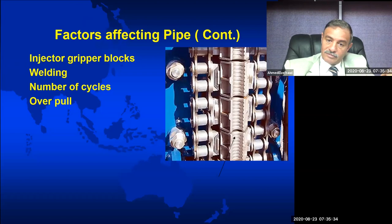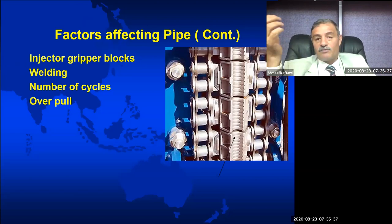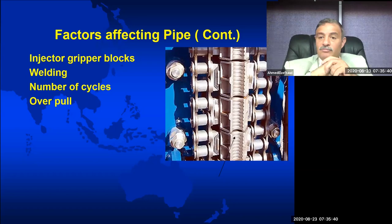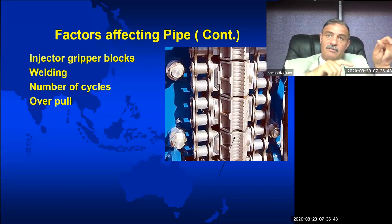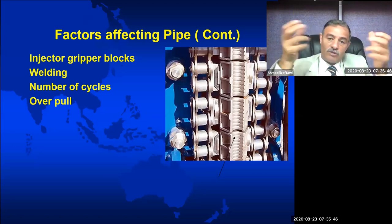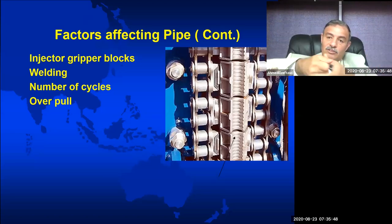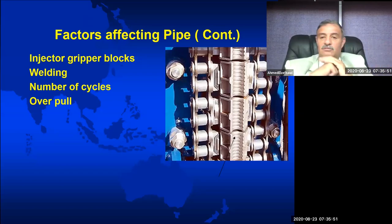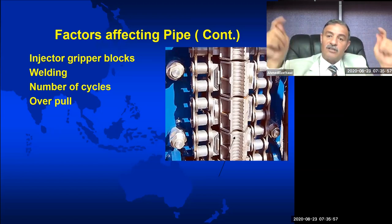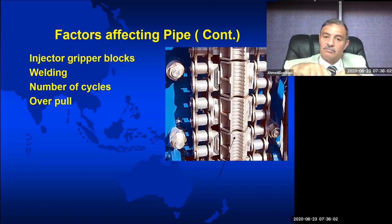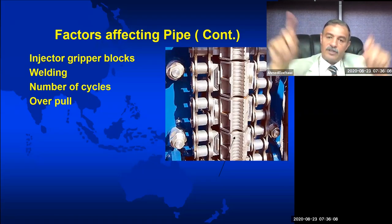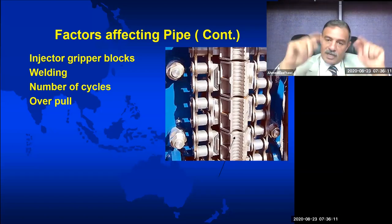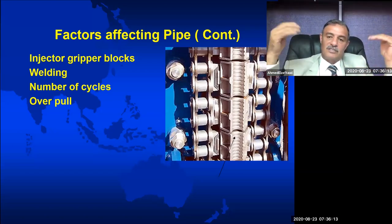An over-pull. If you are running to 10,000 feet and when you pull out of the hole you get stuck, one way to free the stuck pipe is to over-pull. This over-pull you create in the pipe is an extra axial load, converted to axial stress, which reduces tensile strength. If you increase axial stress, you reduce tensile resistance, and then affect the whole picture including burst resistance and collapse resistance.